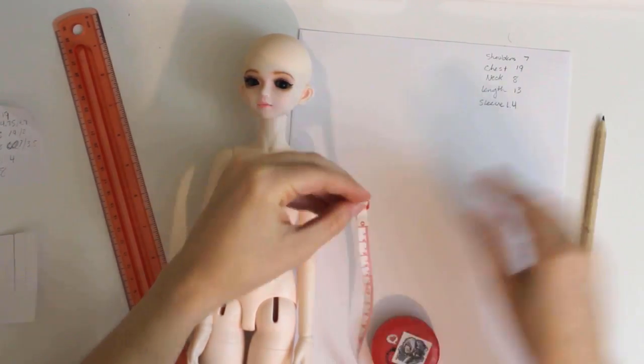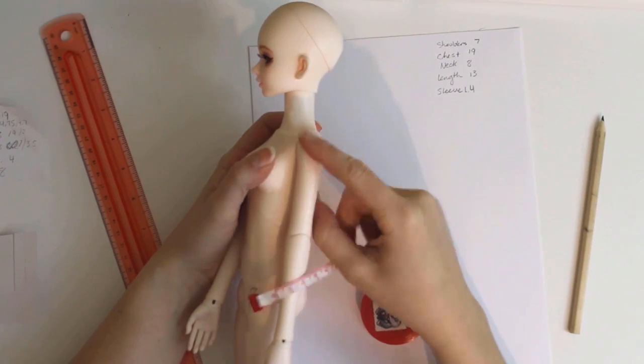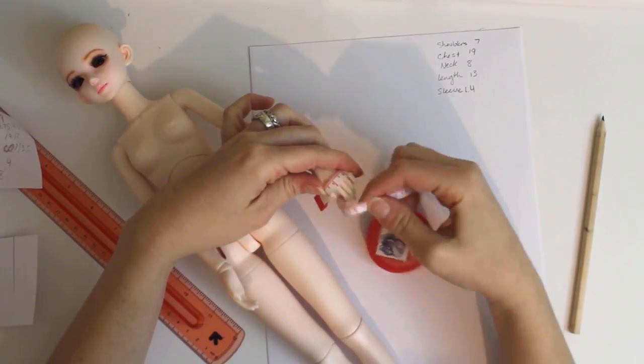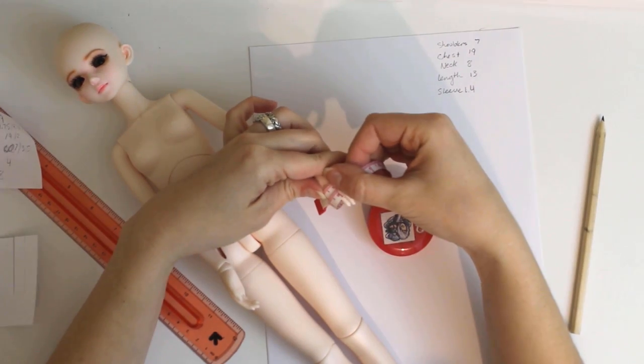The last measurement to take is for the sleeve width. You can go around the doll's arm if you want, but it's usually better to measure the hand instead to be sure it will slide on over their fingers. I'll go with 8 centimeters for this.